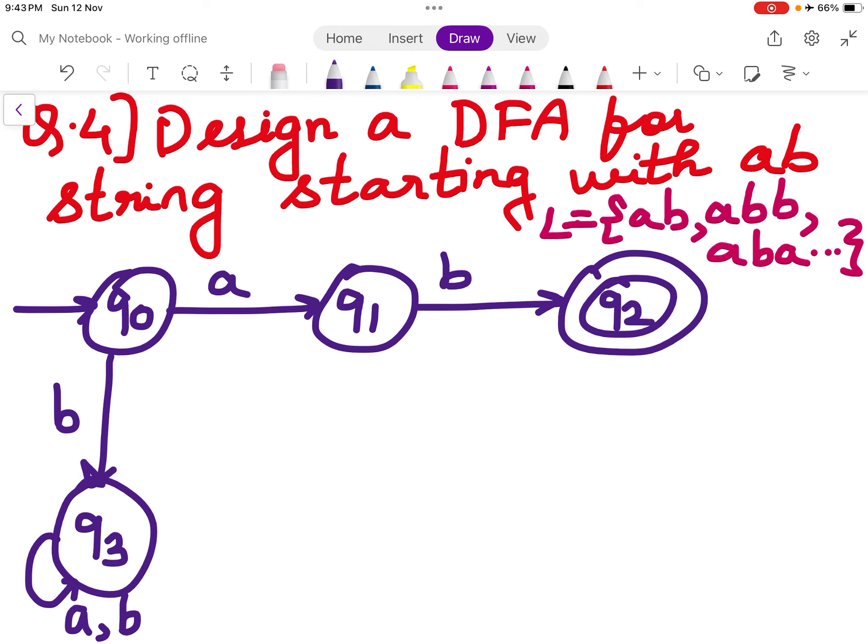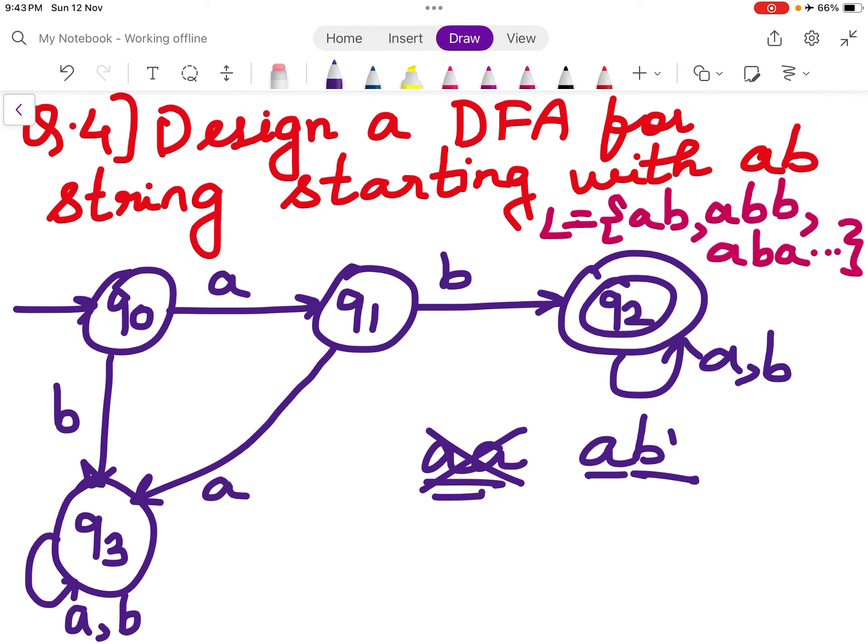Q1 on seeing an A will go to the Q3 state because I will see two A's, which is not acceptable because string should have an A followed by a B. Then in Q2 I can see any number of A's and B's because I have already seen AB and string should start with AB.